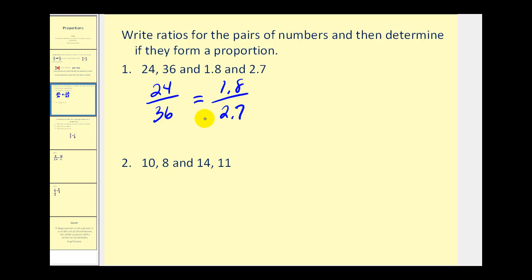If these are equal and form a proportion, then their cross products must be equal. So to see if this is true, we cross multiply. 24 times 2.7 must equal 36 times 1.8 if this forms a proportion.